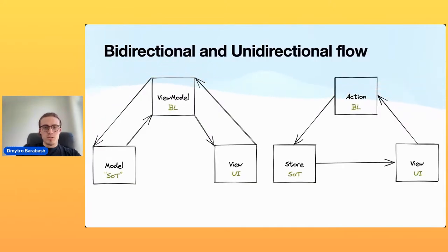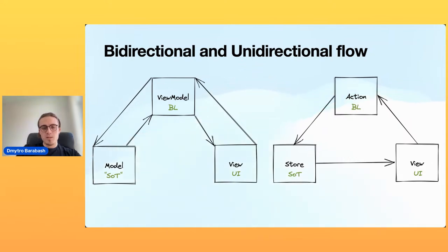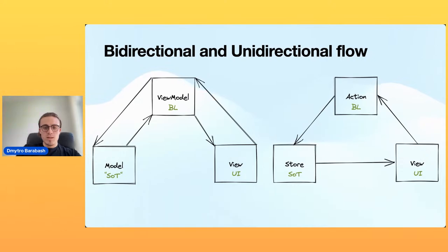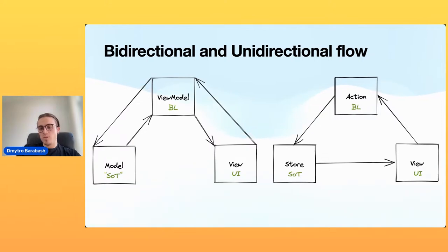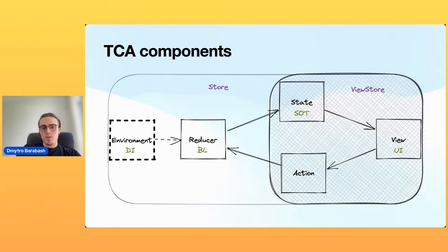Bidirectional vs unidirectional flow: unidirectional flow is a pattern of applying one-way computation on an immutable data state. The system is described as stateful if it's designed to remember processing events or user interactions — the remembered information is called the state of the system. State is the view state at a concrete time, including navigation logic or child actions. The main difference between the two flows is that in bidirectional flow we can communicate in two ways between components, while in unidirectional flow we can only send or receive from one direction.